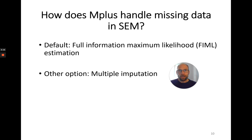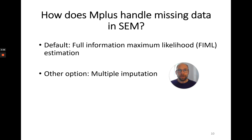With multiple imputation, we can actually replace missing scores with so-called imputed values, and this is something you can also do in Mplus, but you have to specifically ask for it. There are different ways to do this in Mplus. I have another YouTube video where I show how multiple imputation is done in Mplus — you can find a link in the description. Multiple imputation is sometimes preferred, for example with categorical data or when you want to impute at the item level and can't use FIML. It makes the same missing at random assumption and is mathematically equivalent to FIML.